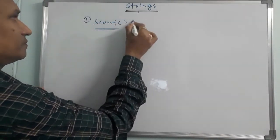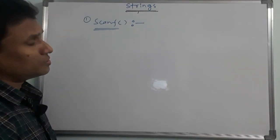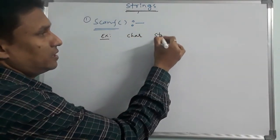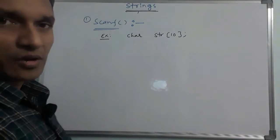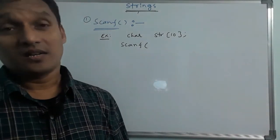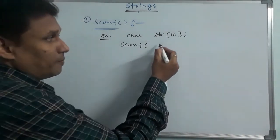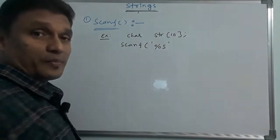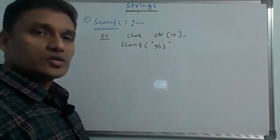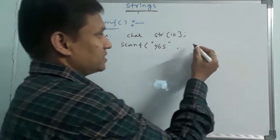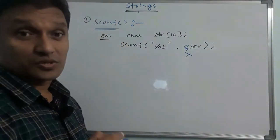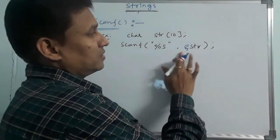At runtime, we use the scanf statement to read a string. The format specifier for a string in C language is %s. So scanf("%s", str) — importantly, the address operator is not required for strings. The string name directly holds the address, so it will be stored directly.